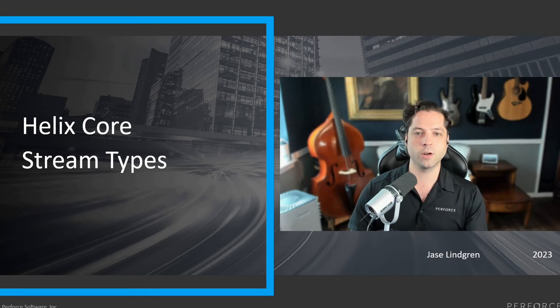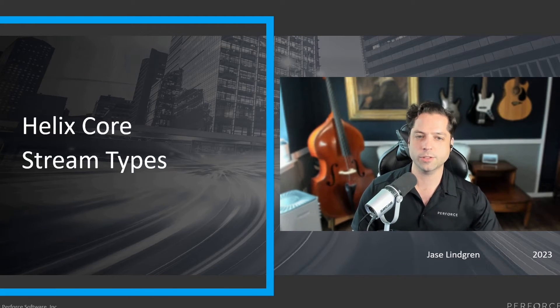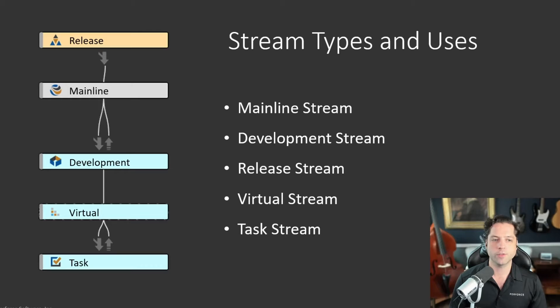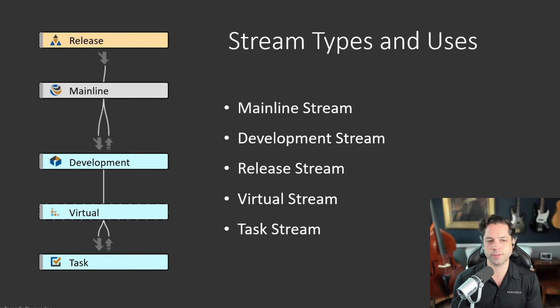You've probably heard about using streams before, but a lot of people are confused about the different types of streams and what you would actually use them for. I want to go over what the different types are, talk a little bit about how you might use them, and show some very quick examples. The first three on this list are the most common — you could think of them as normal streams: the mainline stream, the development stream, and the release stream. These three are fairly similar to each other and are used for slightly different things.